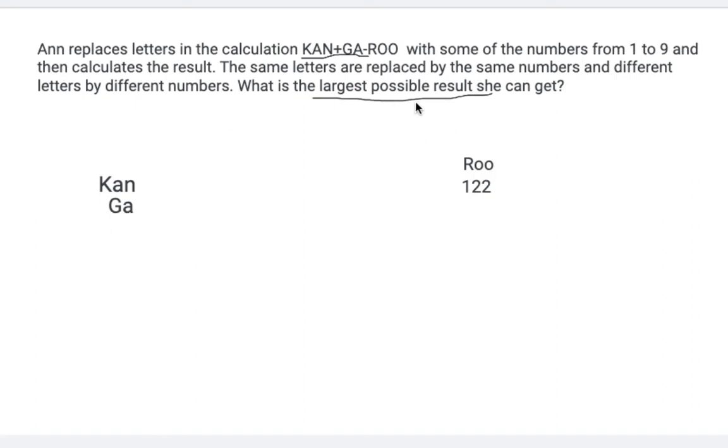Since it's asking for the largest possible result again, we know that these numbers have to be the big ones, the KAN and the GA. First, let's try doing 9 for K and for A, let's try doing 8. But now we realize that if this is 8, then this A has to be 8 too.